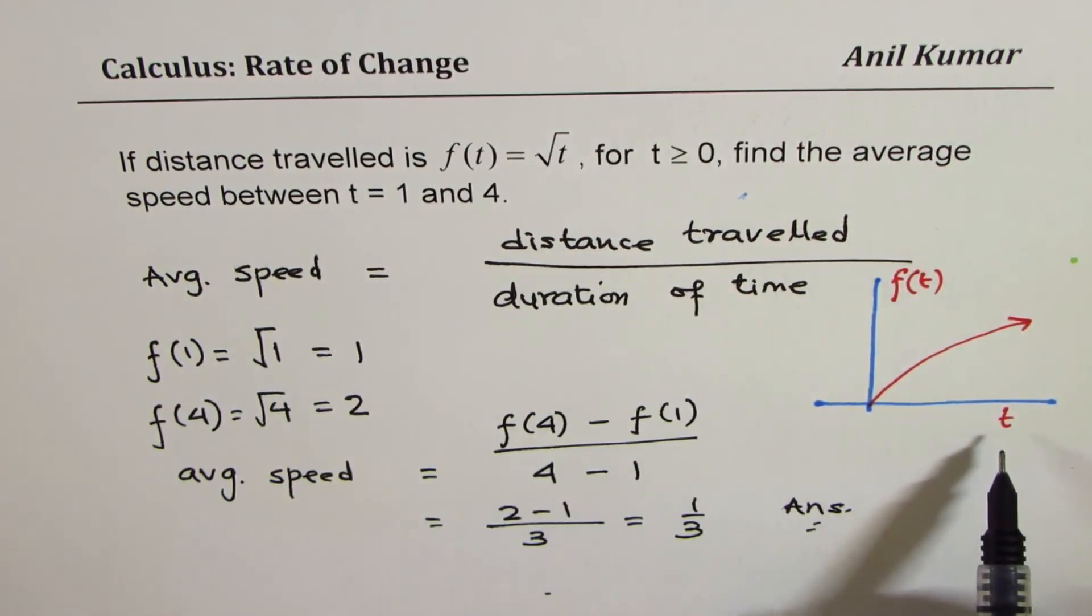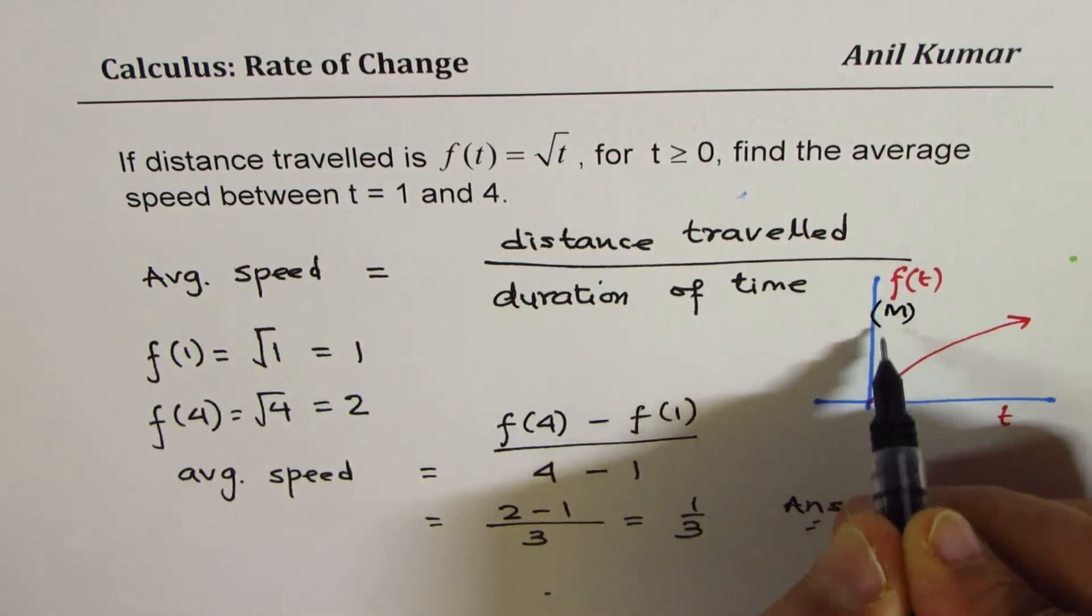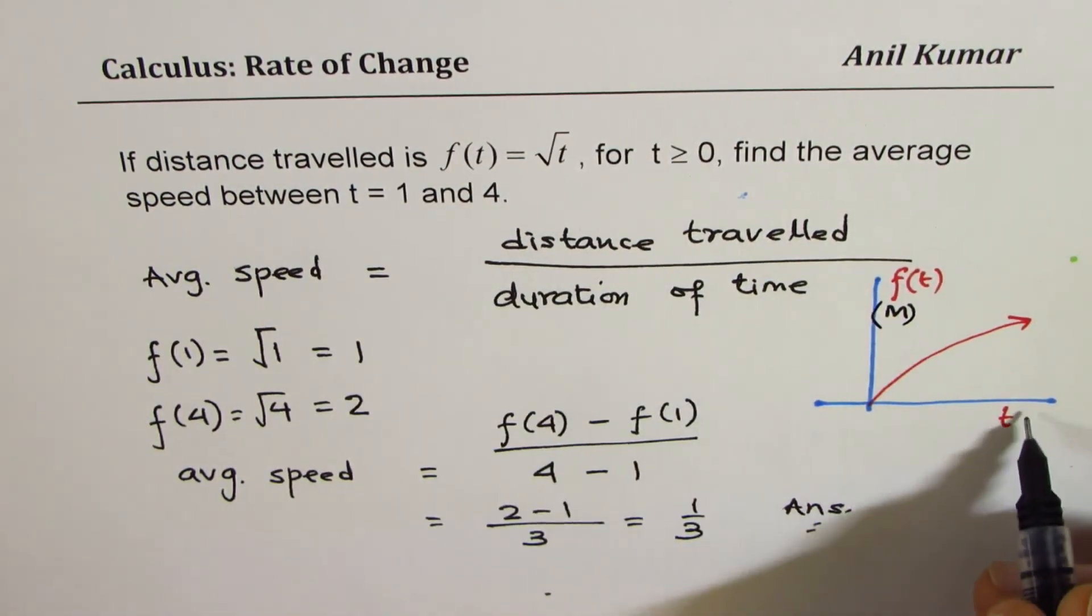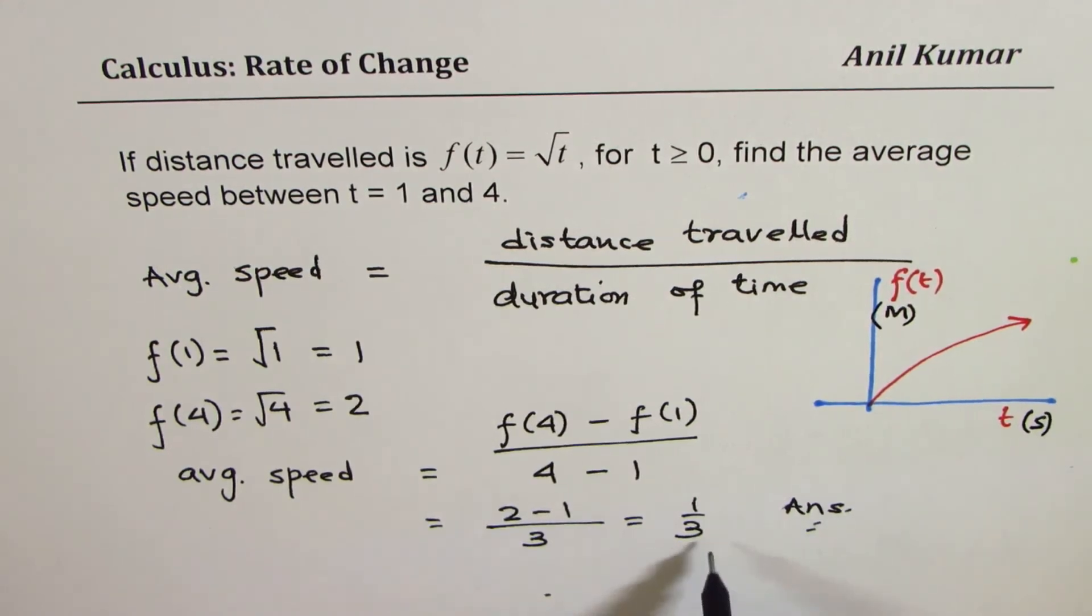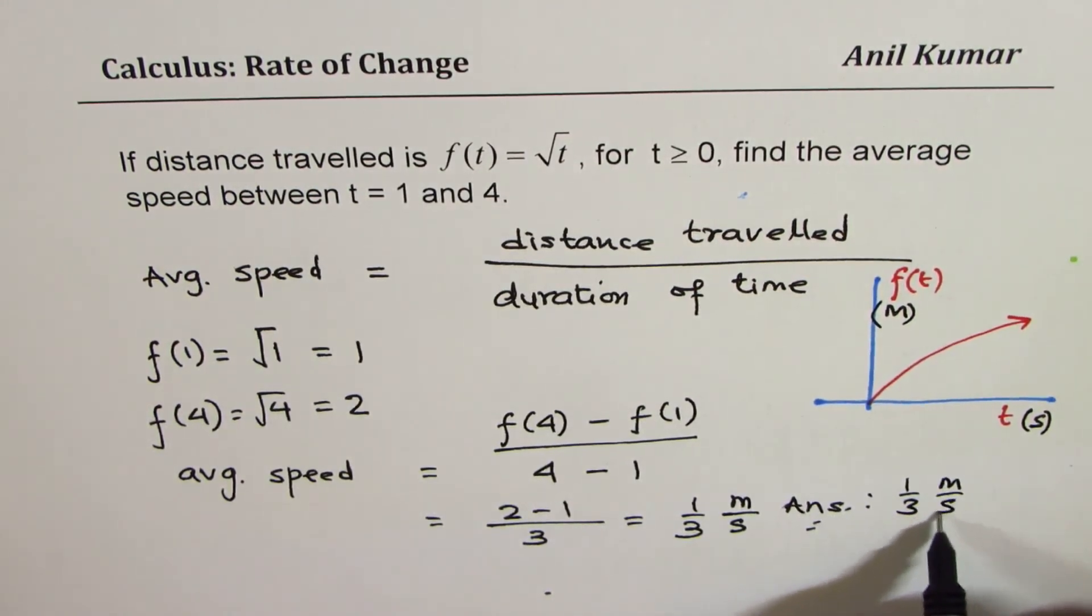Normally, we will actually give units. Let me write - let's say meters for distance (I forgot to write units in the equation) and time is in seconds. In that case, the units will be meters per second. So we will write the answer as 1/3 meters per second.